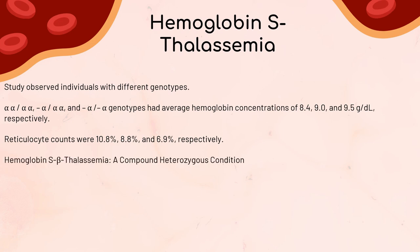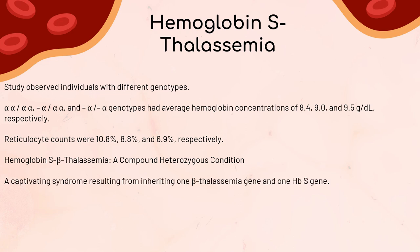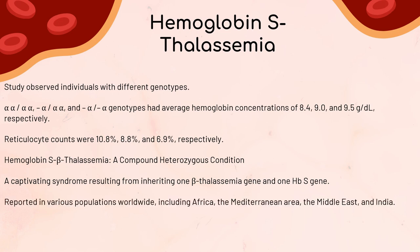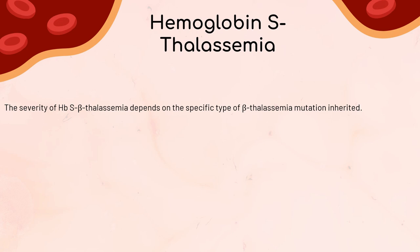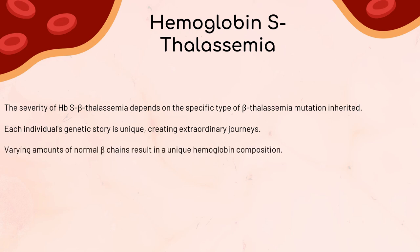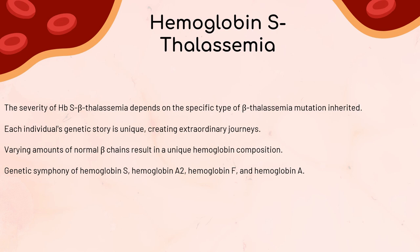Hemoglobin S beta-thalassemia is a compound heterozygous condition resulting from inheriting one beta-thalassemia gene from one parent and a hemoglobin S gene from the other. It has been reported in various populations worldwide, including Africa, the Mediterranean area, the Middle East, and India. The severity depends on the specific type of beta-thalassemia mutation inherited. Individuals with hemoglobin S beta-plus thalassemia produce varying amounts of normal beta chains, resulting in a unique hemoglobin composition — a genetic orchestra of hemoglobin S, hemoglobin A2, hemoglobin F, and hemoglobin A.